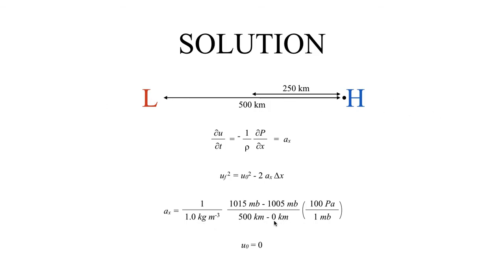Make sure that you're keeping track of your signs and being consistent. If you consider this to be the origin, so this is x equals zero, and this is x equals 500 kilometers, then this 1015 millibar high corresponds to an x value of 500 kilometers. So this is 1015 millibars at 500 kilometers minus 1005 millibars at x equals zero kilometers. If you get those mixed up, you might pick up a negative sign that you don't want. We'll convert that into pascals, so there's 100 pascals in one millibar.